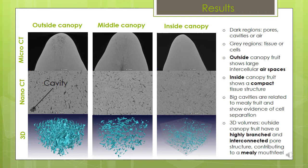Big cavities are related to mealy fruit and show evidence of cell separation and disintegration. When we look at the three-dimensional volume renderings of the pore networks, it is clear that outside canopy fruit have a highly branched and interconnected pore structure contributing to a mealy mouthfeel.